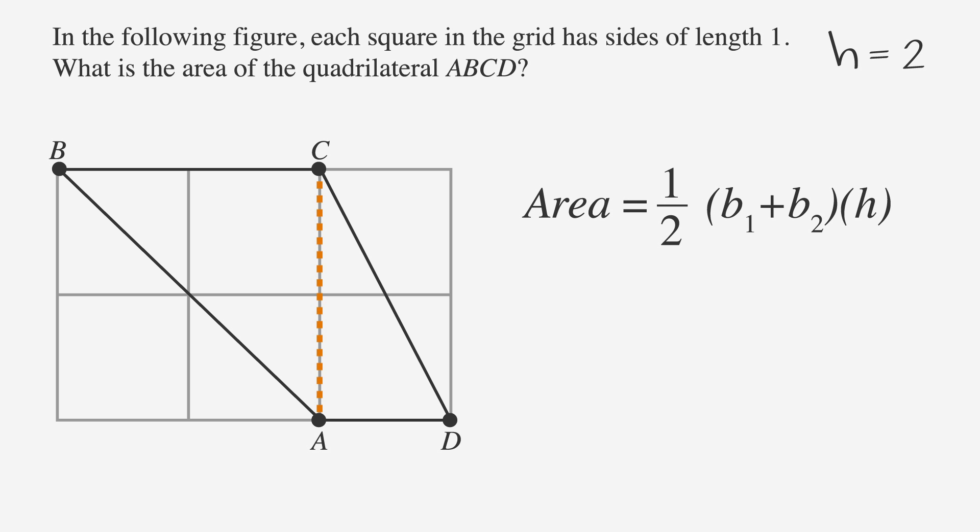Now we can plug this into our formula for the area of a trapezoid. So we have area equals ½ times the sum of the bases times 2, or 1 times the sum of the bases.